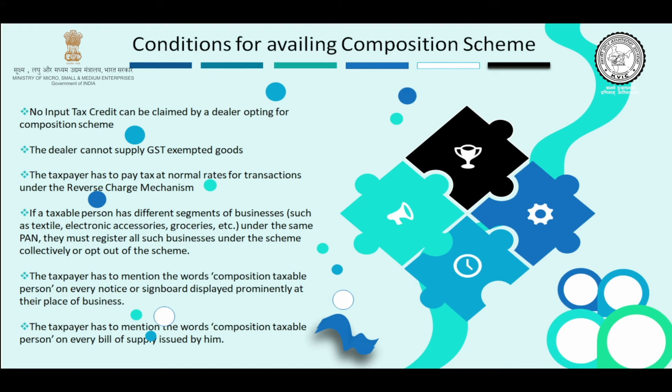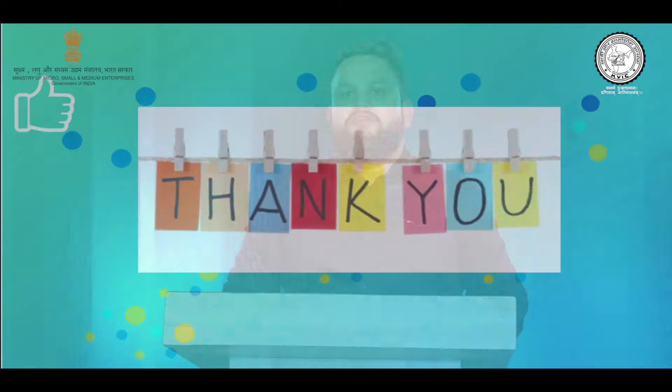Further conditions under the composition scheme: the taxpayer can't charge GST from the customer — he has to pay GST from his own margin. He can't issue tax invoices; he has to provide a bill of supply instead. Also, at his place of business, he has to specifically mention that he is a composition scheme dealer registered under GST. These are the conditions one has to keep in mind in order to avail the composition scheme. Thank you.